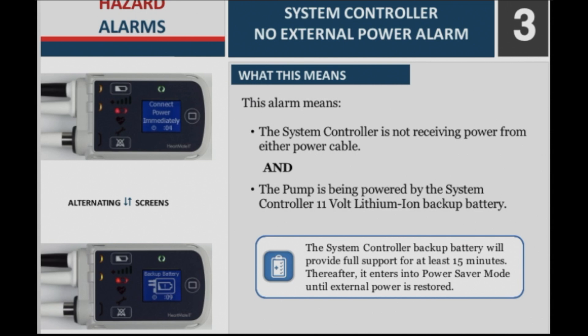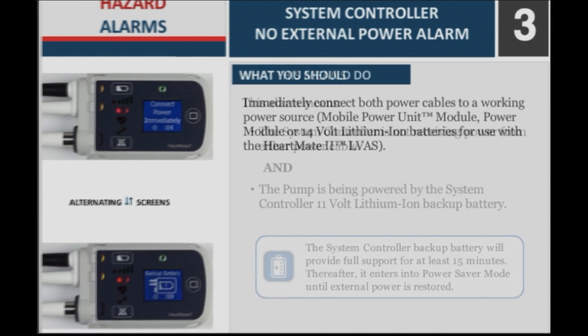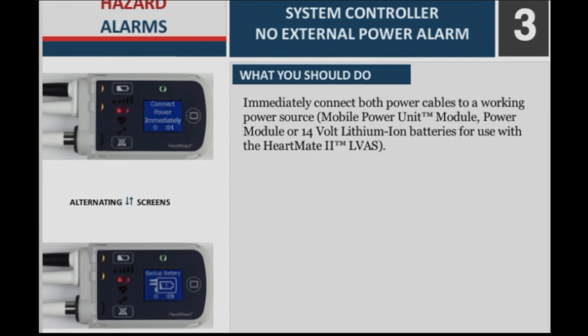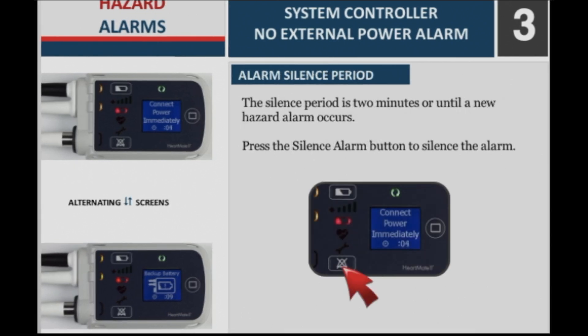The system controller backup battery will provide full support for at least 15 minutes. Thereafter, it enters into power saver mode until external power is restored. What you should do: Immediately connect both power cables to a working power source — mobile power unit module, power module, or 14V lithium ion batteries for use with the HeartMate II LVAD. The alarm silence period is 2 minutes or until a new hazard alarm occurs. Press the silence alarm button to silence the alarm.